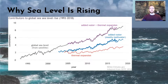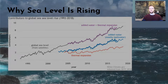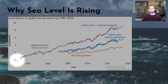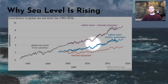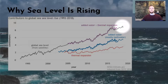A NASA graph helps us visualize this change. Using zero centimeters as the 1993 baseline and tracking data out to 2018, satellite imagery shows us the combined effect of thermal expansion and melt water added to the ocean. This leads to over eight centimeters of global ocean rise compared to 1993.